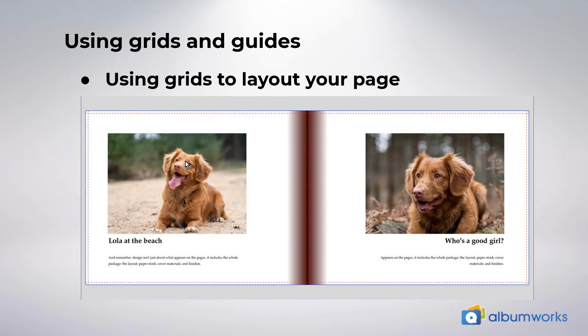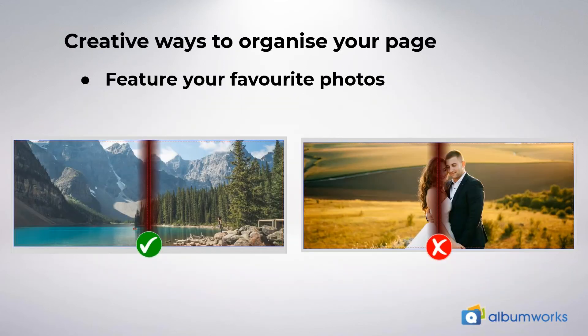Now let's have a look at some creative ways to organize your page. Often we have favorite photos we want to feature more prominently than others. The easiest way is by making the photo take up the entire page, but you can go one step further by making it take up the entire double page spread. If you're making a classic bound photo book, this works best if there are no important elements in the center of the photo, because those parts will get lost in the binding.